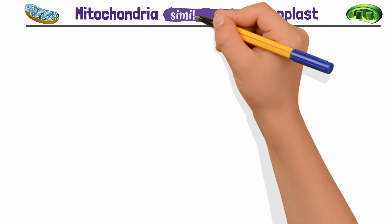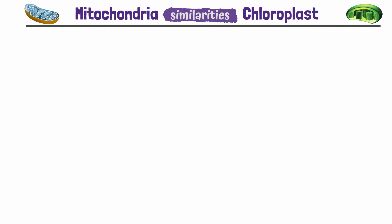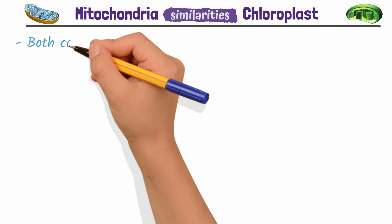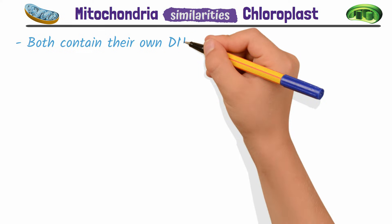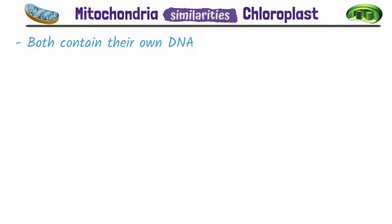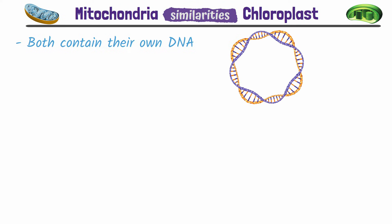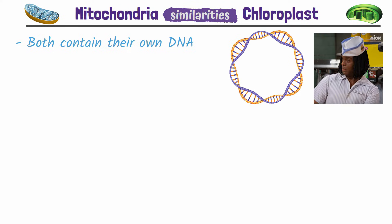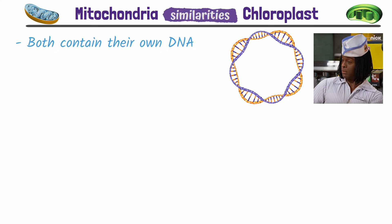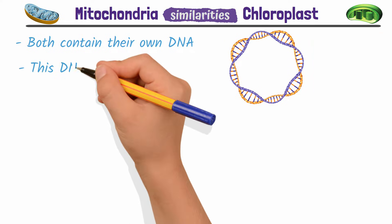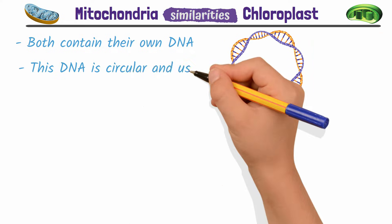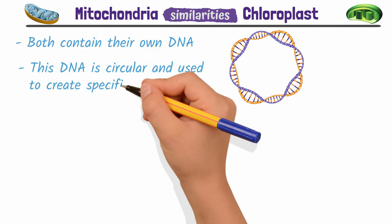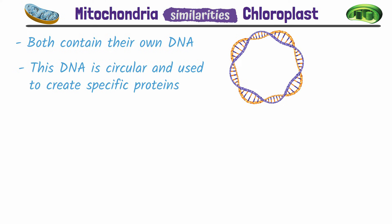Now, on to some key similarities. Both mitochondria and chloroplasts contain their own DNA that is separate from their cell's DNA. That's right, there's more DNA than what's in your nucleus. This DNA is circular and used to create some of the proteins involved in their specific processes.